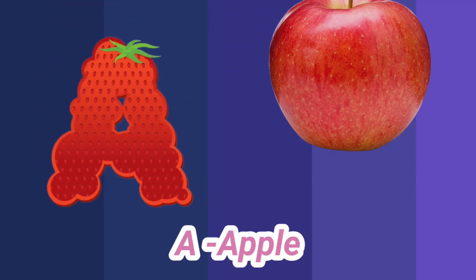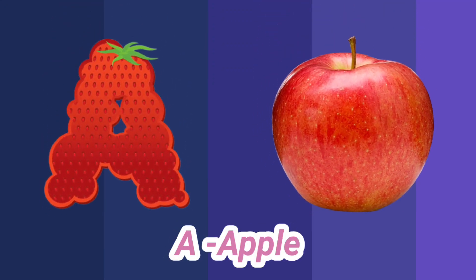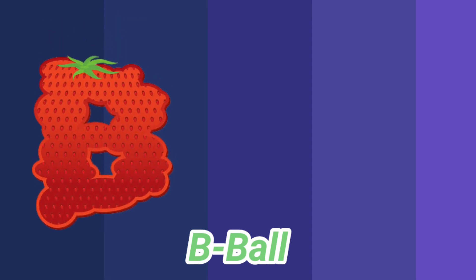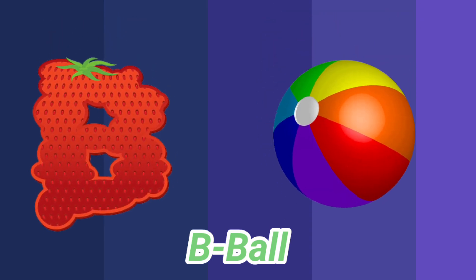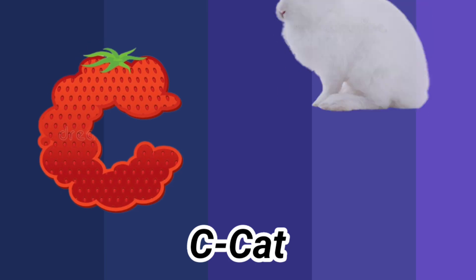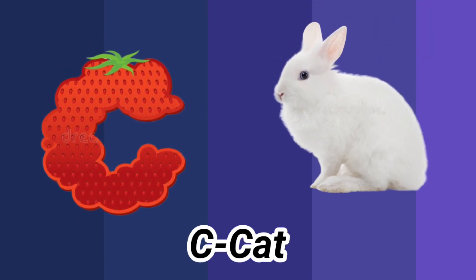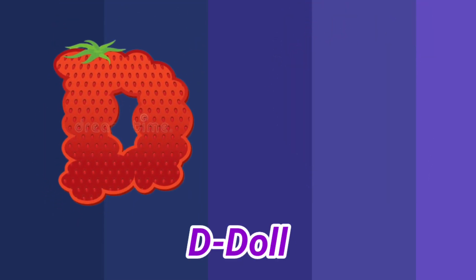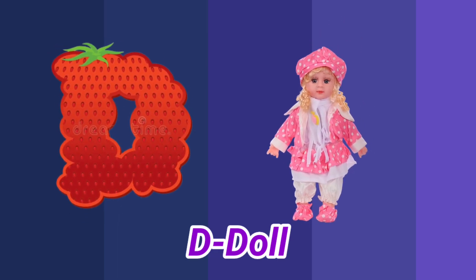A is for apple, a-a-apple. B is for ball, f-f-ball. C is for cat, c-c-cat. D is for doll, d-d-doll.